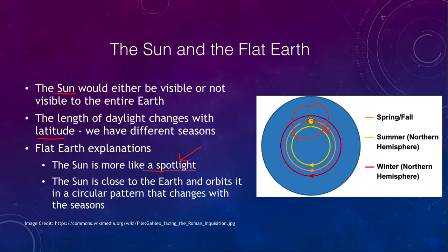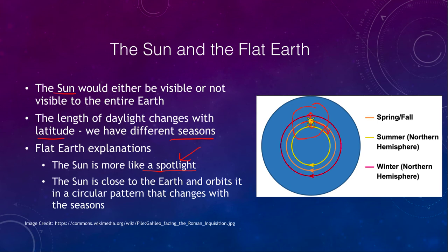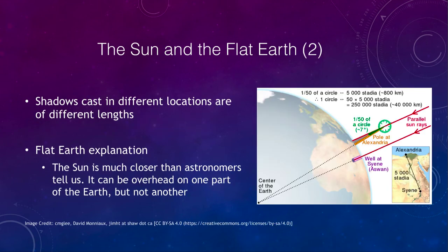You can make a rather convoluted argument that seasons could still be explained on a flat earth by adjusting the sun's changing pattern. But of course it's not as easy as explaining it with simply a tilted earth, which very easily explains the seasons.